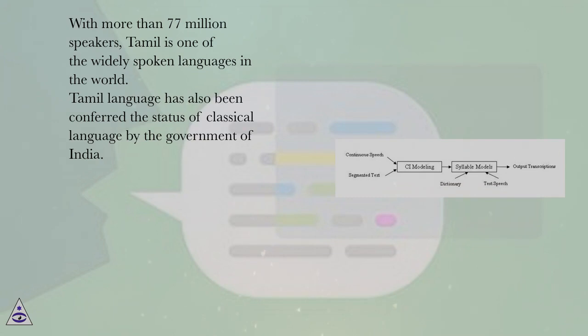With more than 77 million speakers, Tamil is one of the widely spoken languages in the world. Tamil language has also been conferred the status of classical language by the government of India.